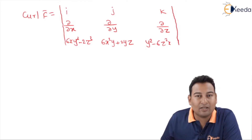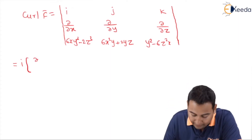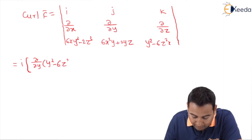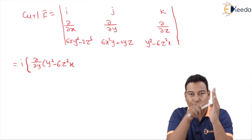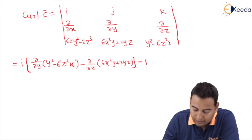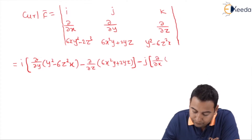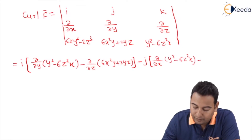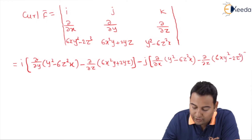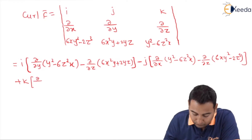If the answer is zero, the vector is conservative. Expanding the determinant: the i-component is ∂/∂y(y² − 6z²x) − ∂/∂z(6x²y + 2yz); the j-component (with a minus sign) is ∂/∂x(y² − 6z²x) − ∂/∂z(6xy² − 2z³); and the k-component is ∂/∂x(6x²y + 2yz) − ∂/∂y(6xy² − 2z³).